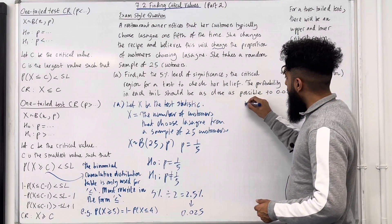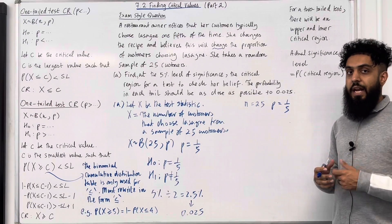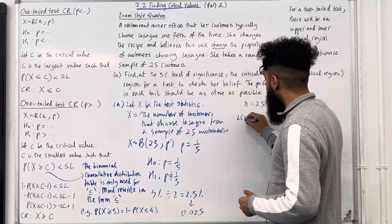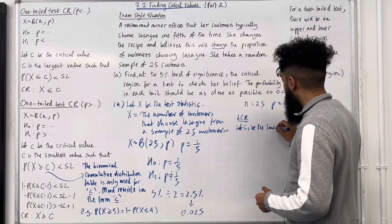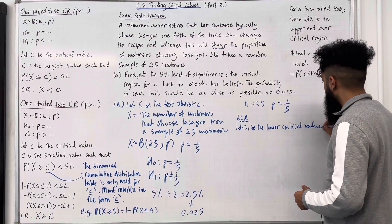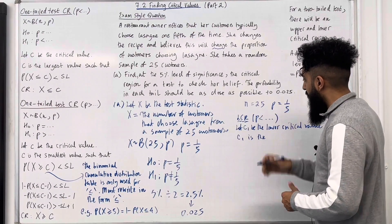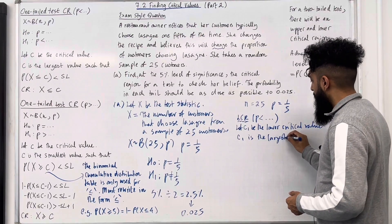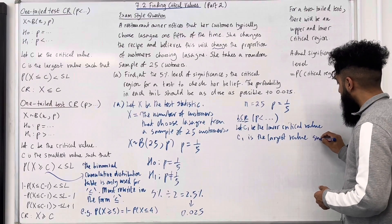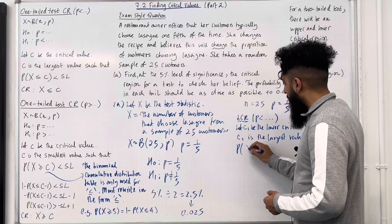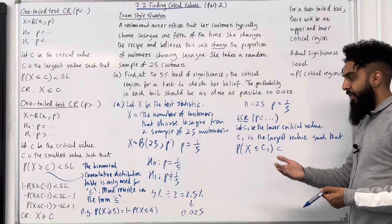With N equal to 25 and P equal to 1 over 5, for a two-tail test we need to find a lower critical region (LCR) and an upper critical region. Let C1 be the lower critical value. C1 is the largest value such that probability X is less than or equal to C1 is less than 0.025, since we're looking at the lower tail. We're looking at 0.025.